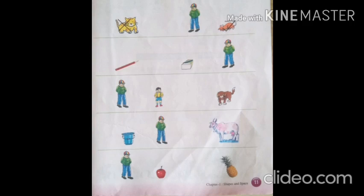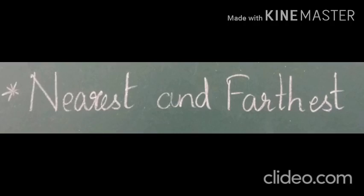In the fifth picture, you can see that an apple is nearer to the man and a pineapple is farther from the man. Iska matlab hai woh seb insaan ke kareeb mein hai aur woh ananas insaan se thoda doori mein hai. This was for nearer and farther.